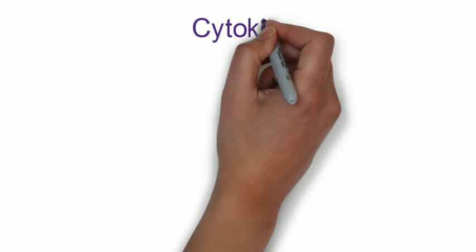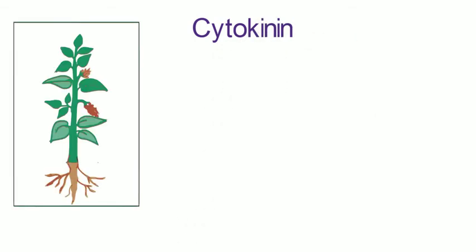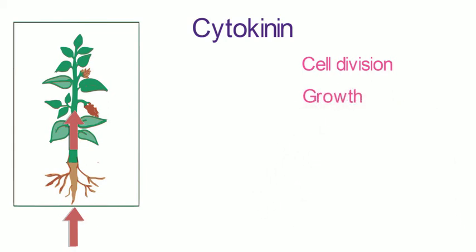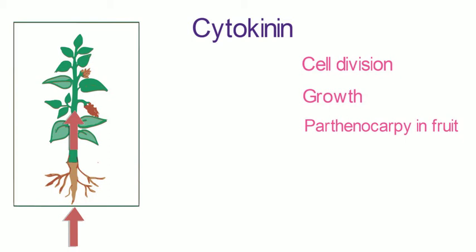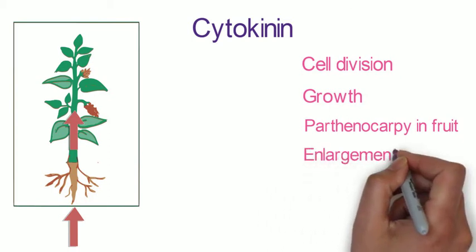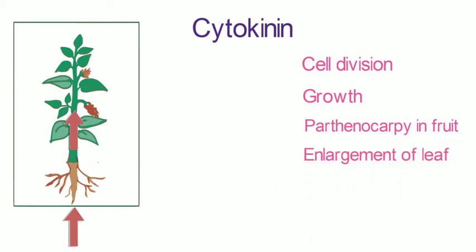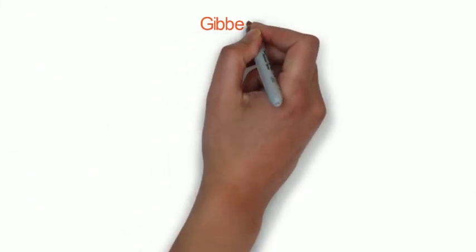The second important plant hormone is cytokinin. It is mainly found in the apical meristem of roots, and in times of need it travels upward to other parts via xylem. As the name suggests, cytokinin helps in cytokinesis or cell division, thus promoting growth in developing regions. It also helps in parthenocarpic fruit formation, enlargement of leaf and fruit, and delaying aging.